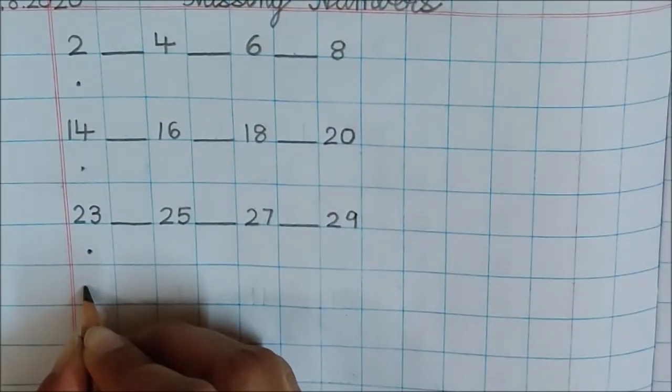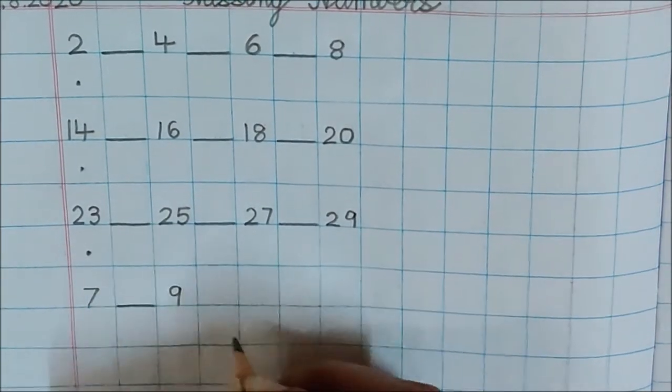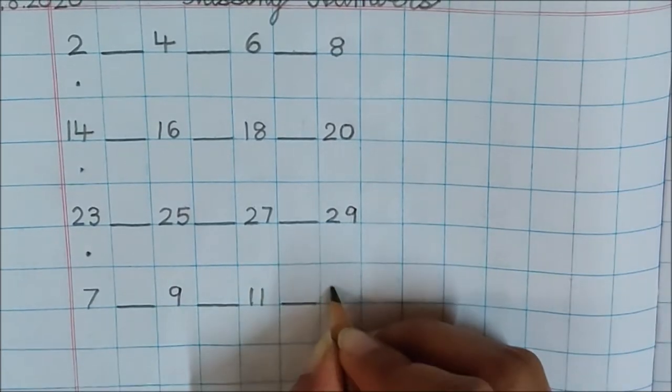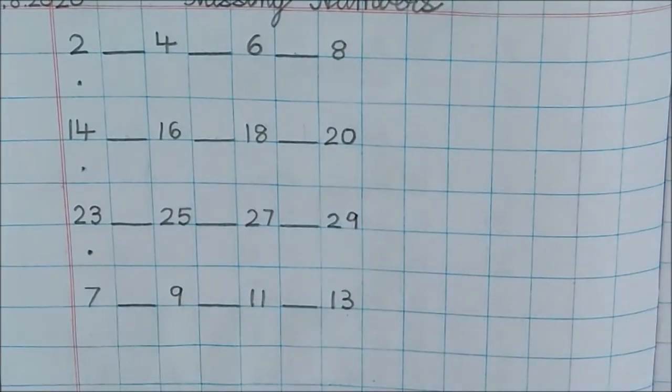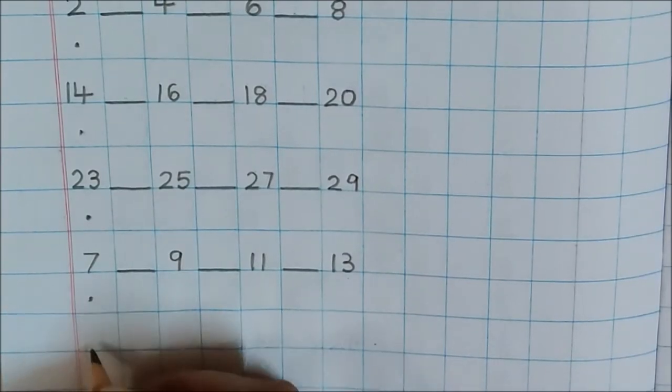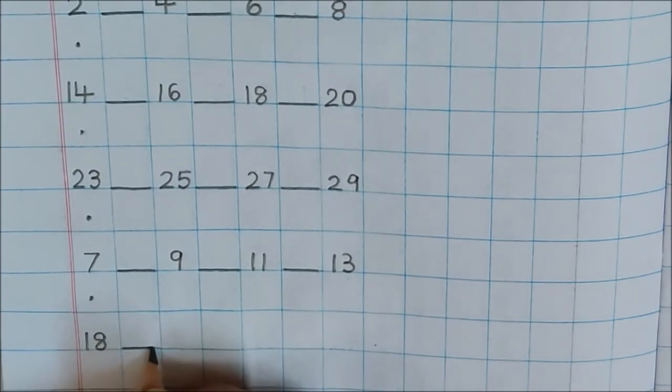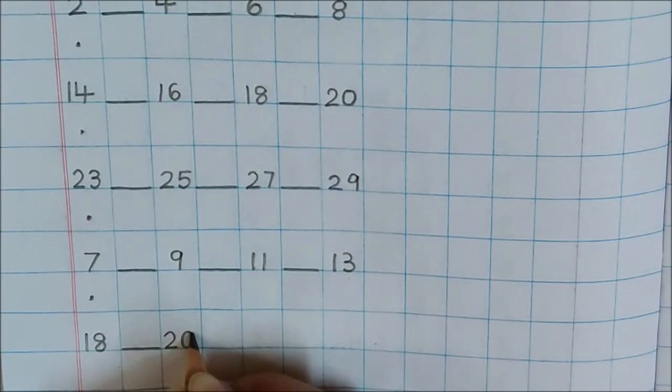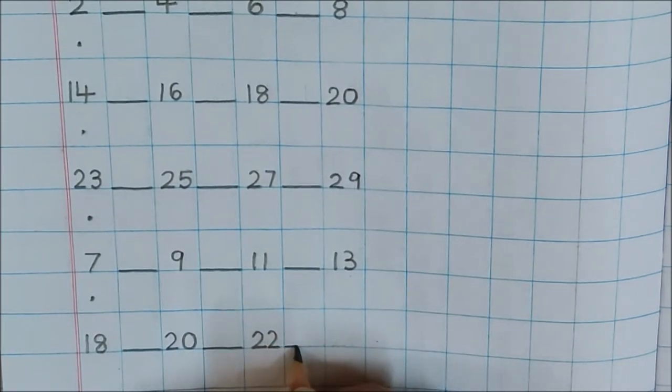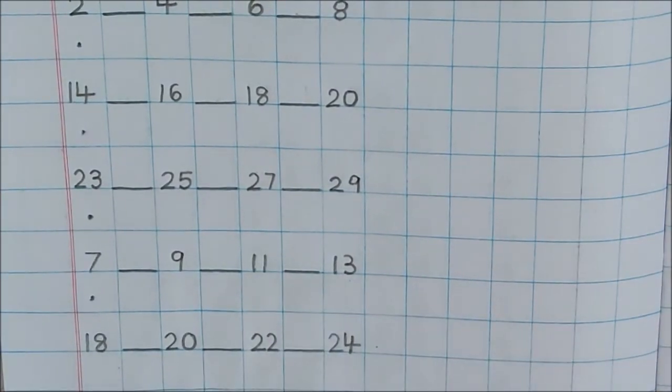Now in the next box, write down 7, dash, 9, dash, 11, dash, 13. Now again below 7, put a dot. And write down in the next box, 18. 18, dash, 20, dash, 22, dash, 24. Have you done the setting?